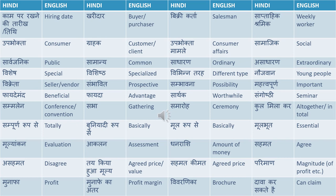Sampoorna rup se means totally. Buniyadi rup se means basically. Mool rup se — that can also be translated as basically. Moolbhut means essential — yeh chiz hamaare is utpad ke liye moolbhut hai. Mool yankan means evaluation. Aaklan means assessment. Sometimes in dialogues you get 'I am your assessment officer' — so you say aaklan adhikari. Dhanrashi means amount of money.